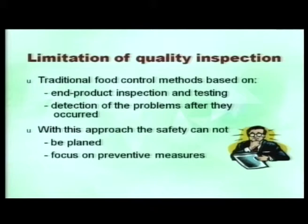There are certain limitations of quality inspections which are very important to understand. Traditionally, food control methods were based on end-product inspection and testing — the entire process was completed, and at the end samples were picked on a random basis and subjected to microbiological testing or chemical analysis. The problem is detected only once the problem has already occurred. This end-product testing approach is a reactive approach — once the problem has occurred, you are taking medicine to control it.